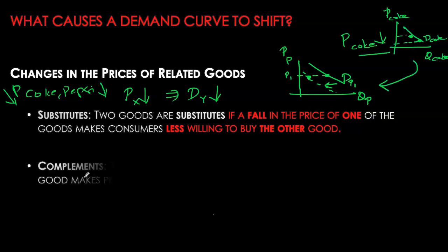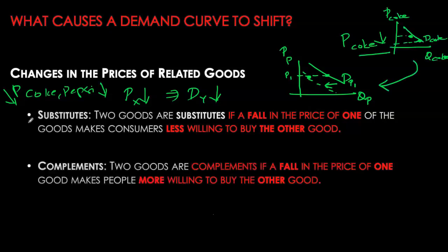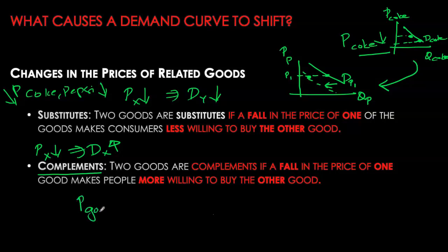In some cases we have an opposite relationship, and these goods are called complements — this is when the price of one going down causes the demand for the other to go up. Complements are goods which consumers typically consume together, such as a laptop and an operating system, or a car and gasoline. If the price of gasoline keeps going up, demand for cars will go down, because as gasoline becomes more expensive people may switch to alternatives like public transportation and are willing to buy fewer cars overall.